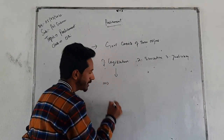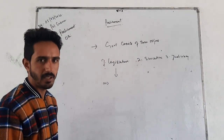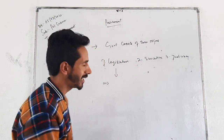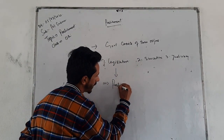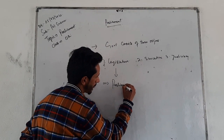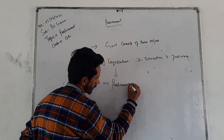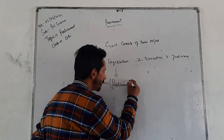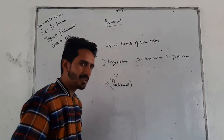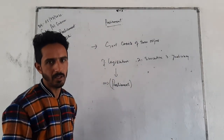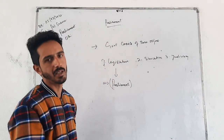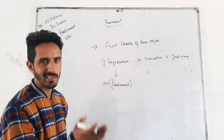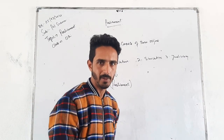The legislative organ of the Union Government, or the legislative part of the Central Government, is known as Parliament. It means that Parliament is the legislative organ of the Central Government or the Union Government.